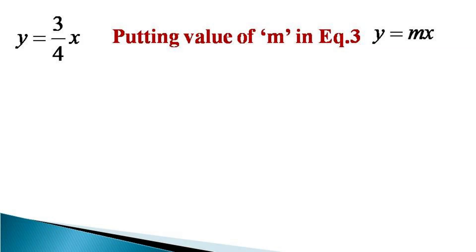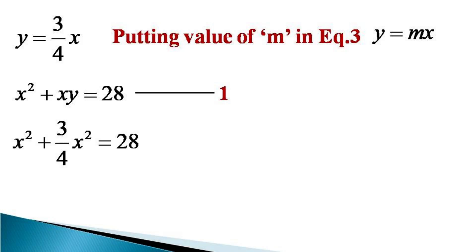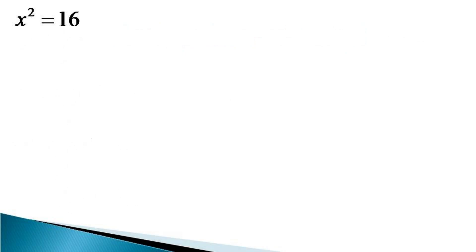Now we recall original equation 1, which is x² + xy = 28, and put the value of y in terms of x to get x² + (3/4)x² = 28. Adding both terms on the left-hand side, we get (7/4)x² = 28. On simplification, we get x² = 16. Taking the square root of both sides, we get x = ±4.